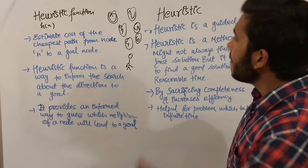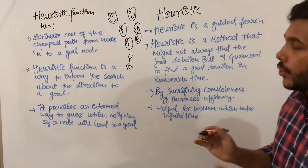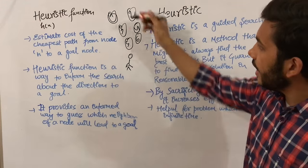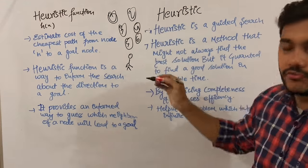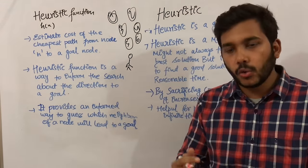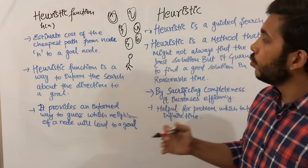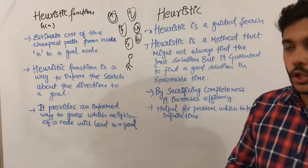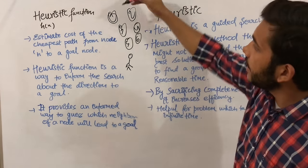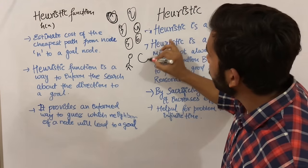The same thing is with heuristic. Heuristic is a guided search — you can say it is a type of instructions. At each point while you are searching for the solution, it will guide you which node you have to choose next so that you can reach the solution. Suppose you have started from this node and your goal node is this one.